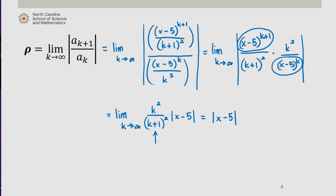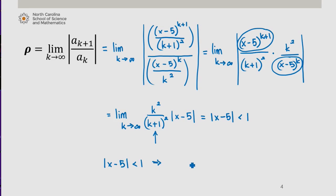The ratio test tells us that the series converges if rho is less than 1. So the series converges for the absolute value of x minus 5 being less than 1. Another way to state this is that x minus 5 is between negative 1 and 1, which means that x is between 4 and 6.